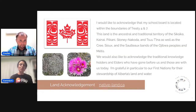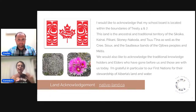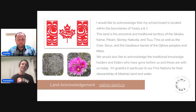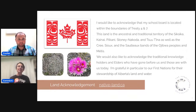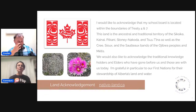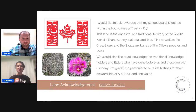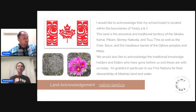At Cobblestone, we like to start off with a land acknowledgement. I would like to acknowledge that my school board is located within the boundaries of Treaty 4 and Treaty 7. This land is the ancestral and traditional territory of the Siksika, the Kainai, the Pekani, the Stoney Nakoda, and the Tsutena people — those are the Treaty 7 folks — as well as the Cree, the Sioux, and the Saulteaux of the Ojibwa, and of course Métis throughout both of those treaty areas. We would like to acknowledge the traditional knowledge holders and the elders who've gone before us and those who are still with us today.